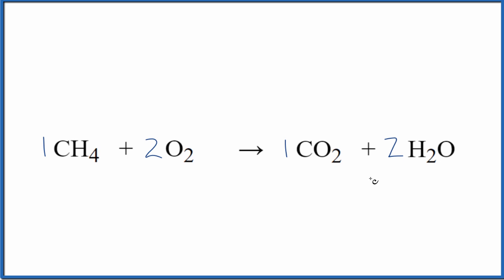When we balance the equation, what we're finding are the ratios between all the substances involved in the reaction: CH4, O2, CO2, and H2O. We can use this to solve those stoichiometry problems.